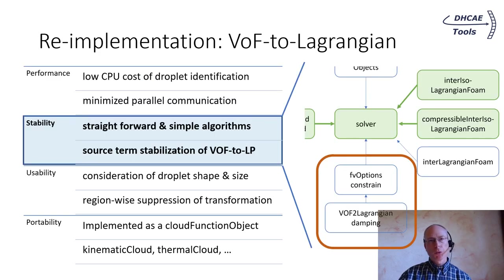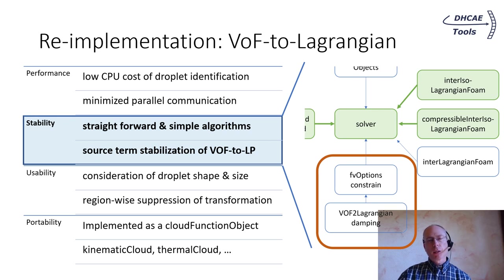Really important is the stability of the VoF-to-Lagrangian algorithm. One drawback of existing solutions were occasional crashes. With the use of simple algorithms and data structures, our VoF-to-Lagrangian function proved to be very stable. Beside the VoF-to-Lagrangian itself, it is necessary to provide stability to the rest of the solver equations. This is done by source-term stabilization at the moment of particle creation and grid unrefinement.